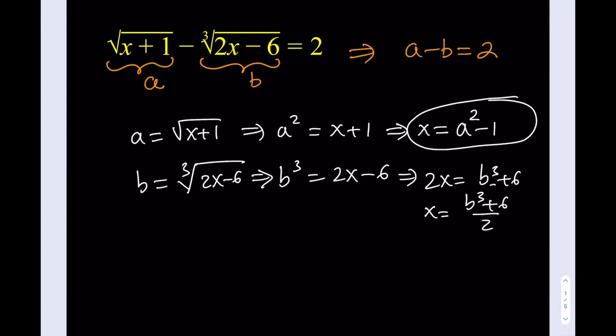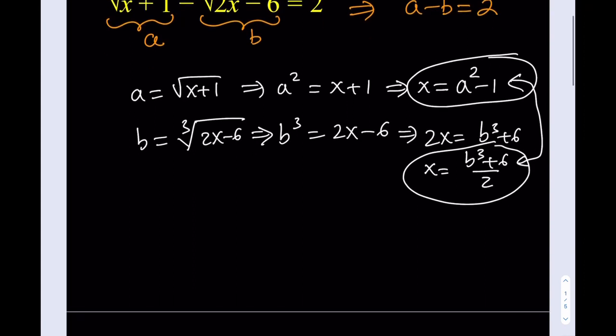From the second equation, I can actually add 6 to both sides, and that's going to give me B cubed plus 6, and then I can divide both sides by 2, and that's going to give me x again. So what's so good about getting x in terms of A and B separately? Well, if two things are equal to the same thing, and I've said this before, if two things are equal to the same thing, then they're equal. So that means that these two quantities are equal to each other. Beautiful. Let's go ahead and write that down. So we get B cubed plus 6 over 2 equals A squared minus 1.